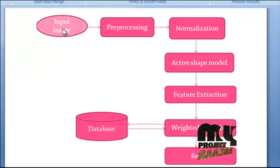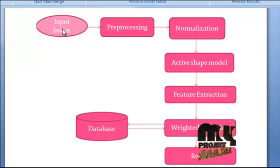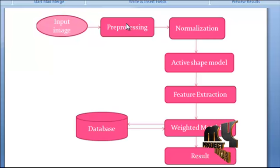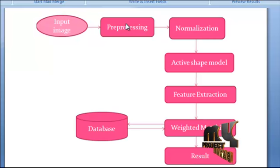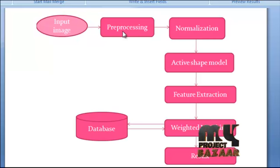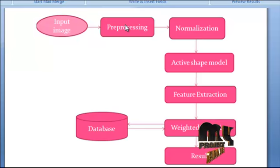Now let me see the flow of our project. First, the input image is loaded and then it is pre-processed. In the noise removal process, we convert the image into gray and then filters are applied. For filtering, we use a Gaussian filter. The Gaussian filter is a windowed filter of linear class which removes noise from the image using the weighted mean.